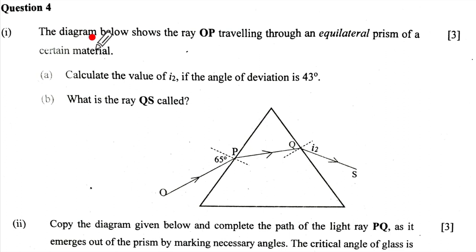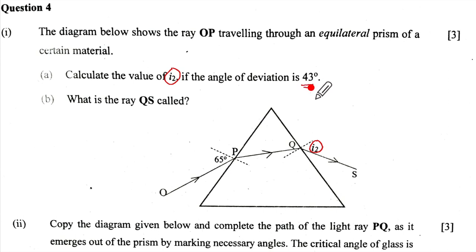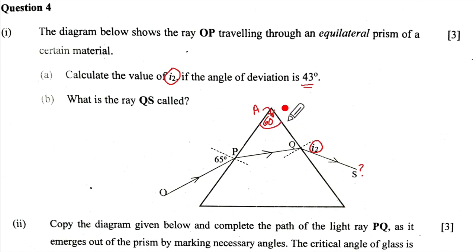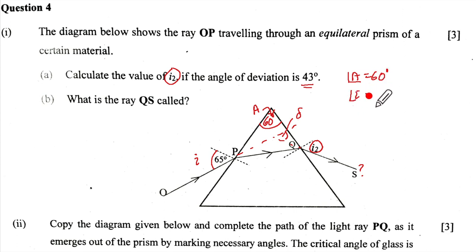Let us look at Question 4, first subpart. The diagram shows ray OP traveling through an equilateral prism. Calculate the value of I2, given that the angle of deviation is 43 degrees. For an equilateral prism, all angles are 60 degrees, so angle A equals 60 degrees. Angle I1 is 65 degrees and delta is 43 degrees. We need to find I2.